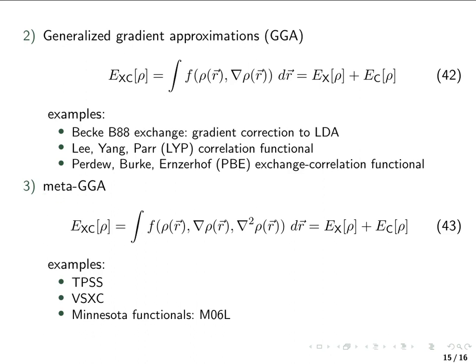And these functions are called meta-GGA. And again, there will be either correlation functional, exchange functional, or combined ones. Some examples for those are the TPSS or the VSXC functional, which both come from the group of Scuseria, or the Minnesota functionals by Truhlar and co-workers, for example M06L.